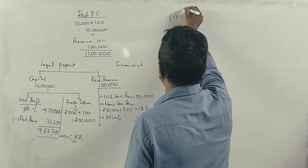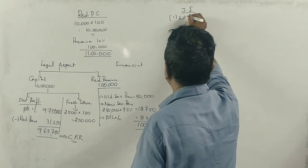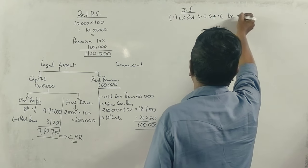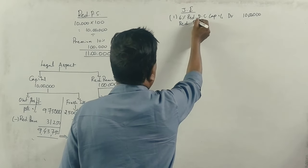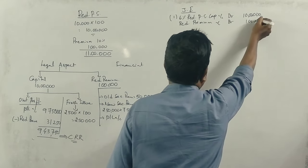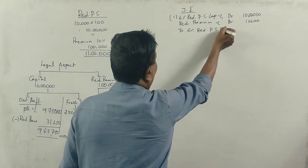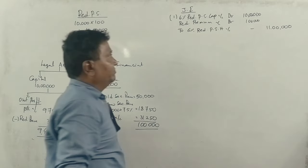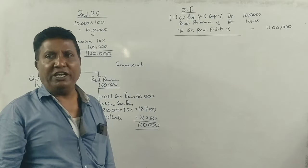Now let's prepare the journal entries. First entry for the fully paid shares: 6% Redeemable Preference Share Capital Account debit 10 lakhs, Redemption Premium Account debit 1 lakh, to 6% Redeemable Preference Shareholders Account 11 lakhs. The total amount due to preference shareholders is 11 lakhs. Correct?